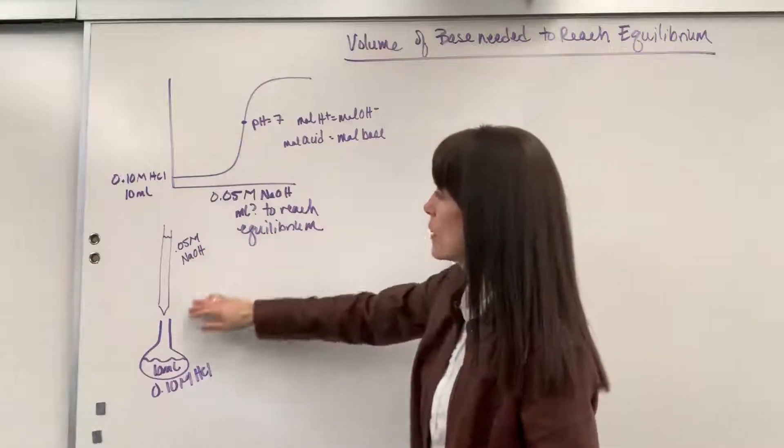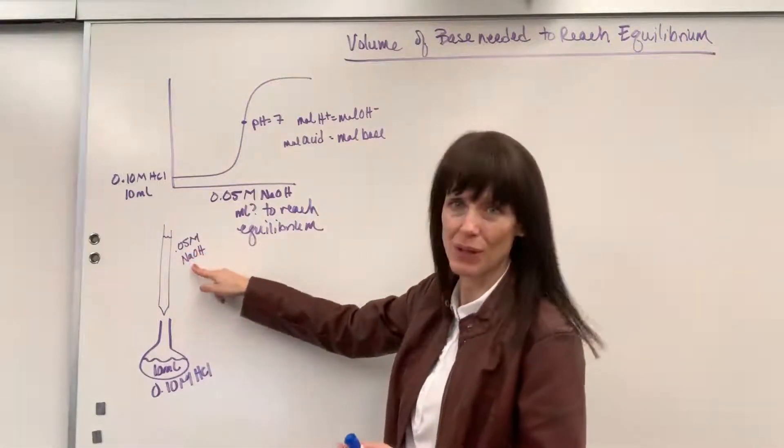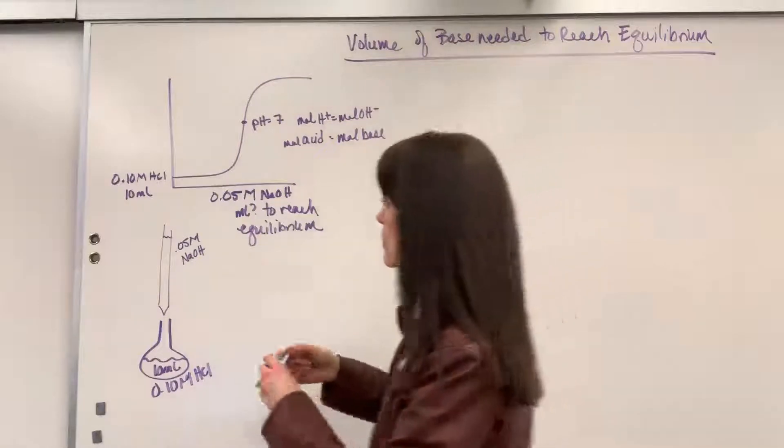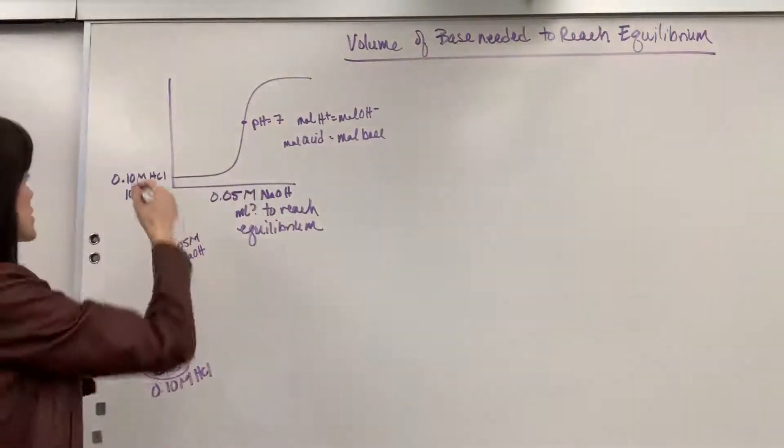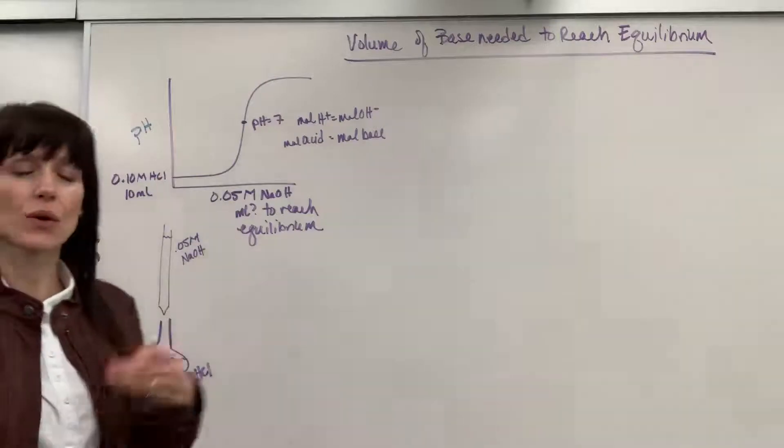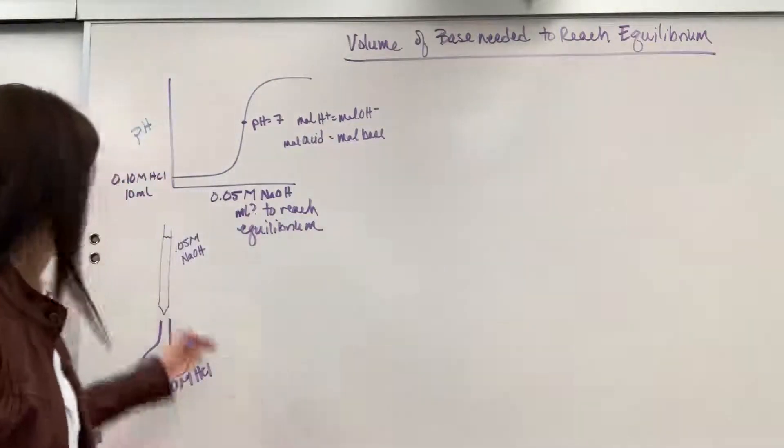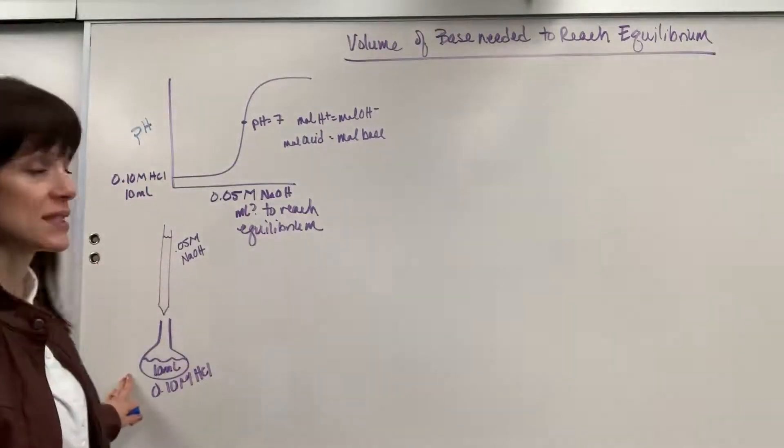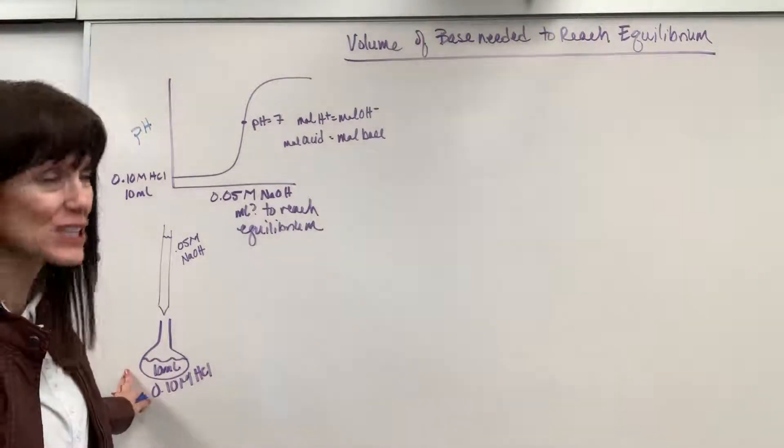Now, in my burette, I have 0.05 molar sodium hydroxide. So remember, on my titration curve, the y-axis is pH and the x-axis is going to be volume of the titrant. This is my titrant down here. The hydrochloric acid is the analyte.